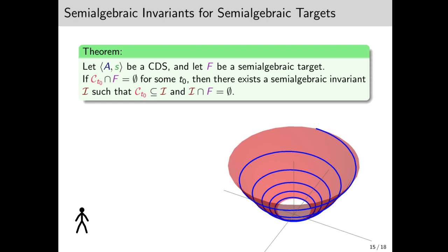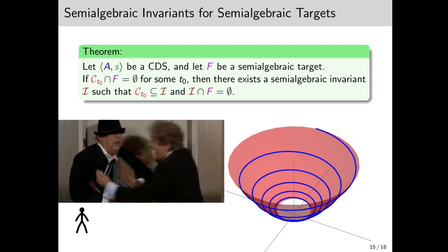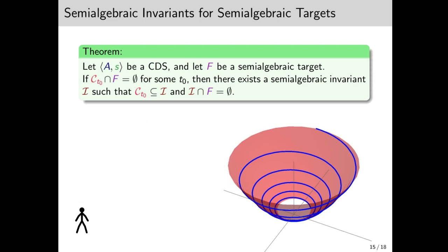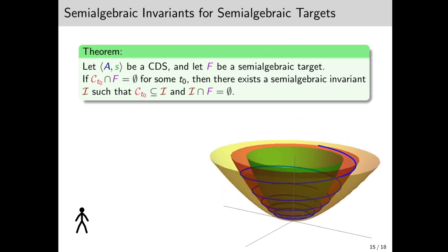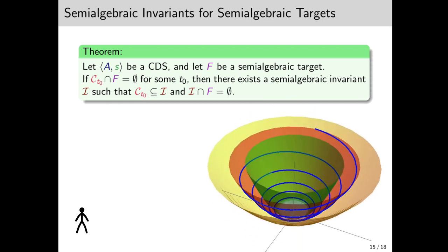What we do to obtain a semi-algebraic set that contains this cone is to simply take CT0 and make it FAT! Yes, exactly as Leo Bloom says, we make the cone FAT. We do this by taking an upper bound and a lower bound, and then everything between them is the fat cone. And if we make it tight enough, then it will avoid the semi-algebraic target.